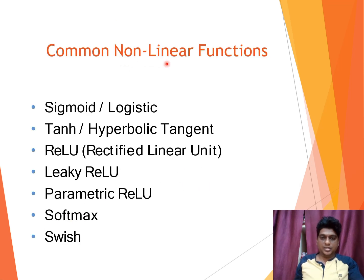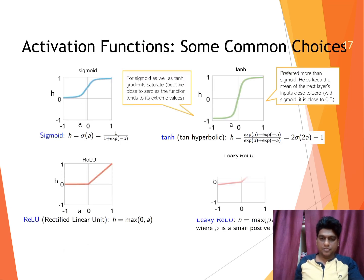Some common classifications in non-linear activation function: sigmoid or otherwise it is called as logistic, then tanh other name is hyperbolic tangent, and rectified linear unit, leaky rectified linear unit, parametric rectified linear unit, softmax and the swish activation function. Some graphical representations of the activation functions: this is sigmoid and this is tanh and this is a rectified linear unit and leaky rectified linear unit.